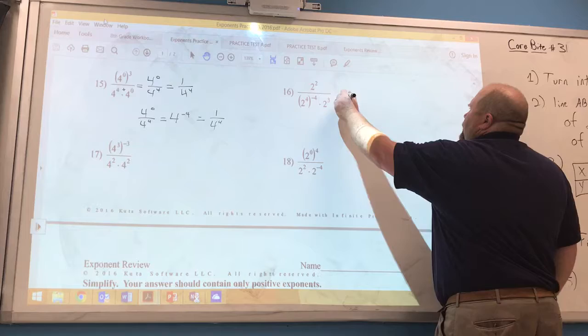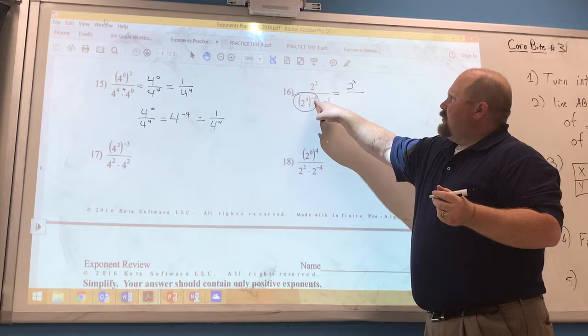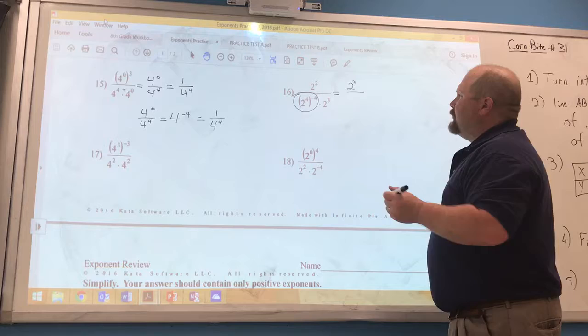Number 16. Two to the two is okay. We need to go ahead and simplify this part down here where the parentheses exist. So we have power to a power. We're going to multiply the powers. So this is going to be four times a negative four. So that'll create two with a negative 16 power.